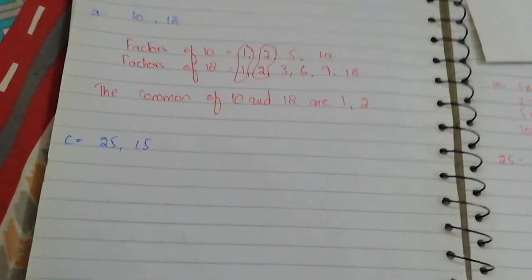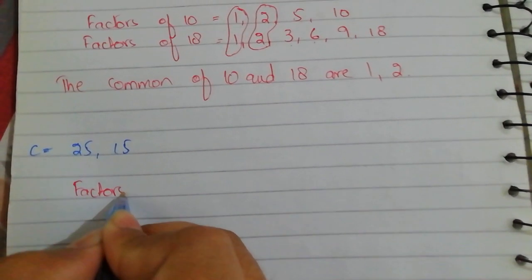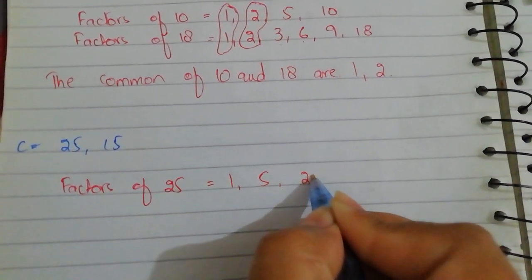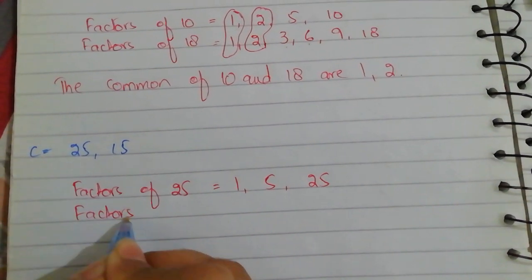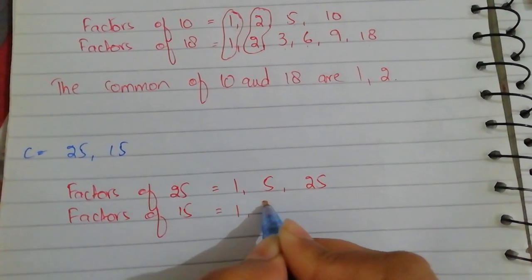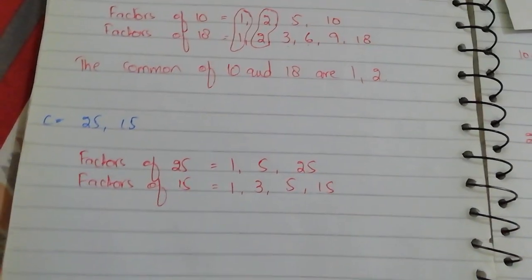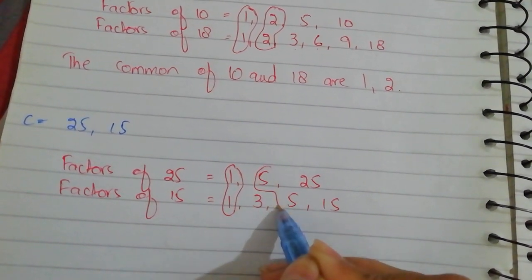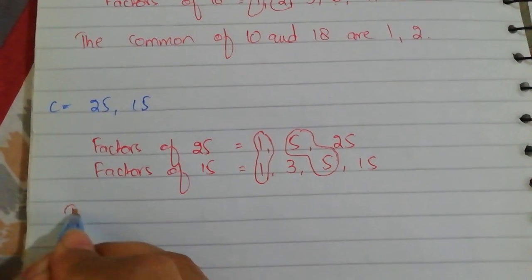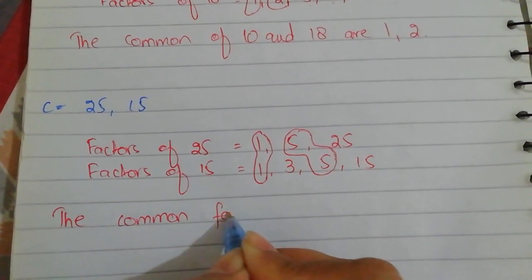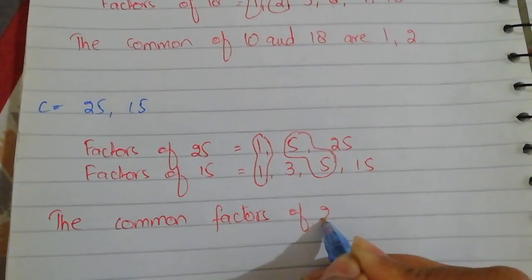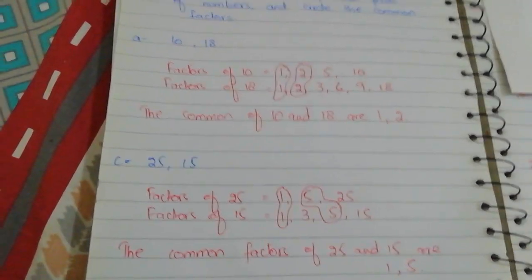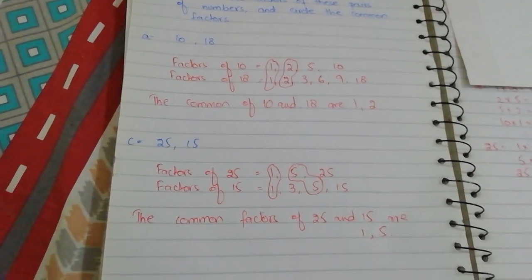So the factors of 25 are 1, 5, and 25. The factors of 15 are 1, 3, 5, and 15. The factors which are common in both numbers are 1 and 5. So the common factors of 25 and 15 are 1 and 5.